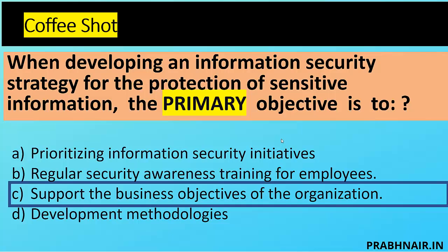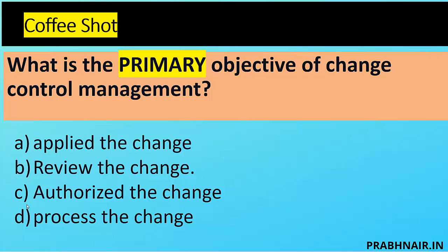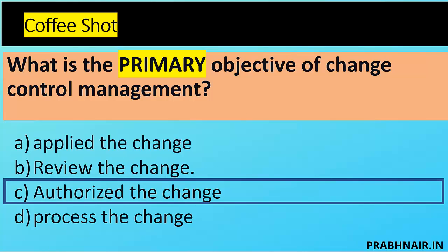Question 2: What is the primary objective of change control management? Option A: apply the change — that is the input, not always primary. Option B: review the change — one of the governance requirements, but not always done. Option C: authorize the change — makes sense. Option D: process the change — an input requirement. The ultimate goal of introducing change management in an organization is to ensure we introduce only authorized changes and can track accountability. So the answer is C.